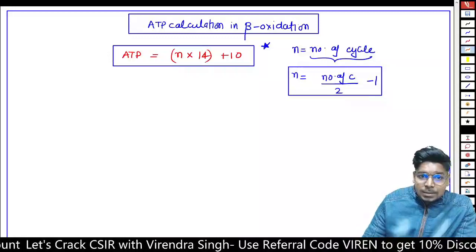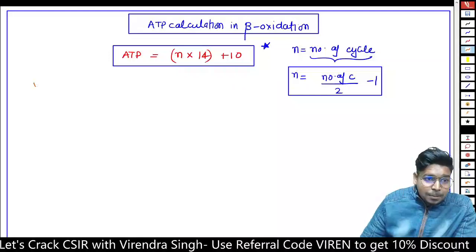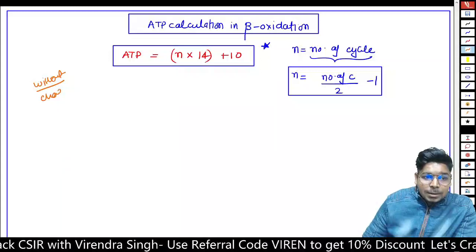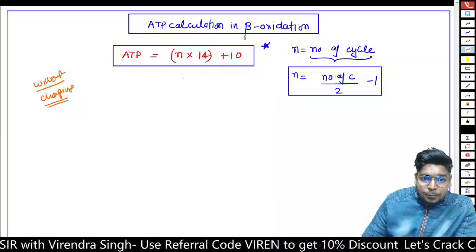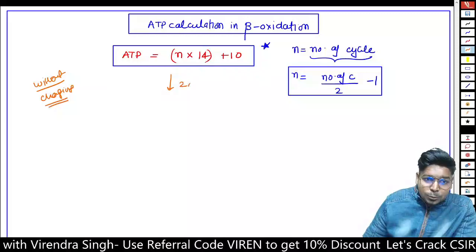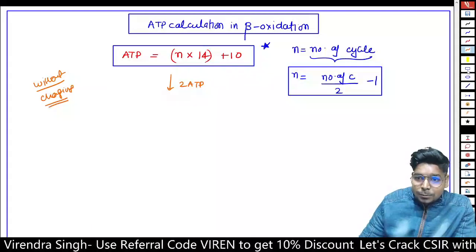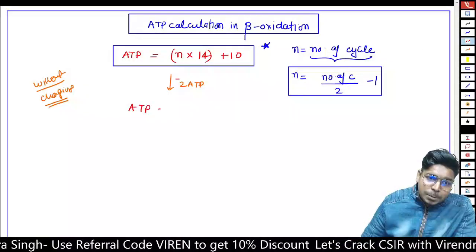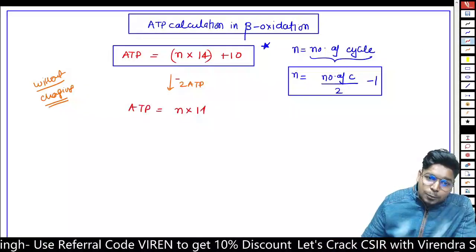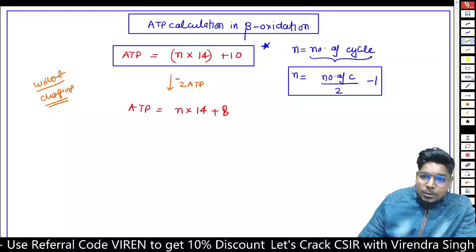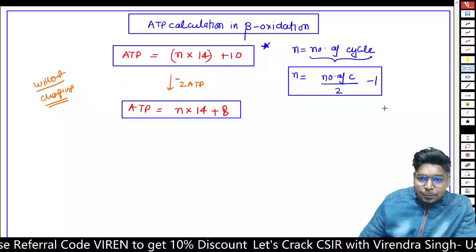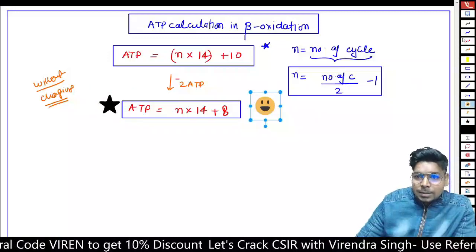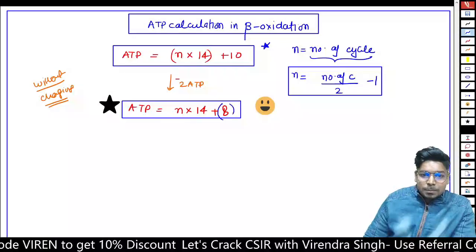This method works when calculating without charging. This formula will be more refined because 2 ATP is consumed, so we subtract 2 ATP. Therefore ATP should be N into 14 minus 8... actually this is the final formula: N into 14 plus 8. This formula will work like a guaranteed remedy.